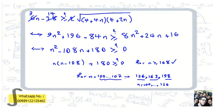Since n is assumed to be at least 100, we only need to separately check the small cases n = 100 to 107. For those cases, the explicit triangle a = 126, b = 163, c = 198 (or a = 127, b = 163, c = 199) works. Therefore the problem is proved for all cases.